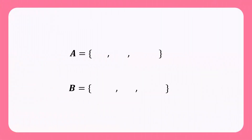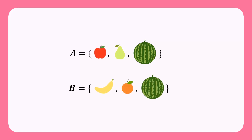Consider two sets A and B. Set A consists of apples, beers, and watermelons, while set B consists of bananas, oranges, and watermelons.